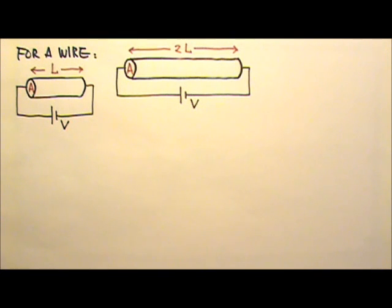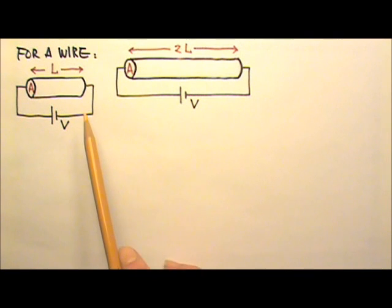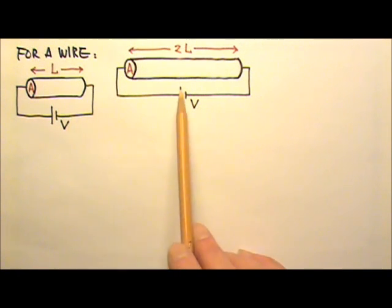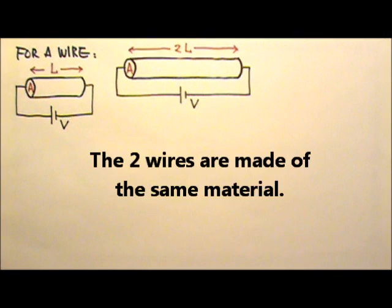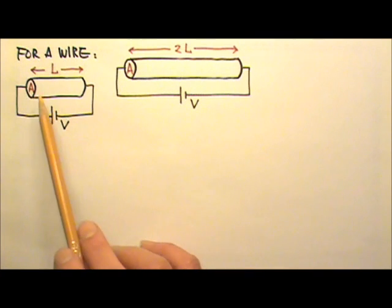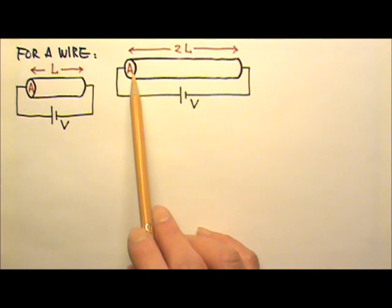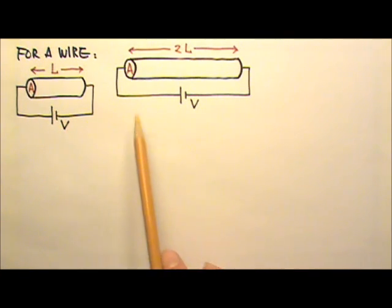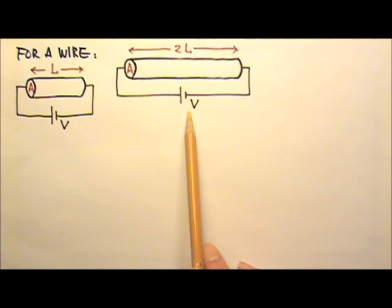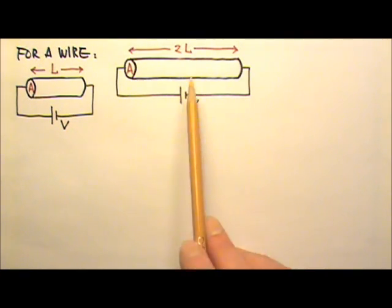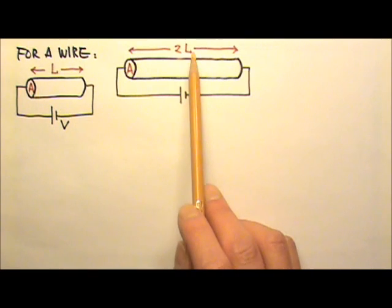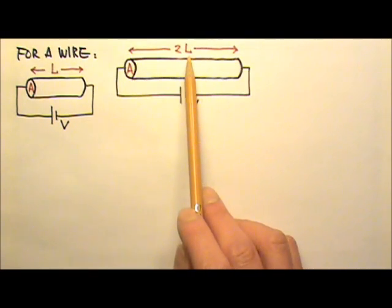In this lesson we're going to study the resistance of a wire. Let's begin by comparing these two wires with the same cross-sectional area and connected to the same voltage battery, but the second wire is twice as long.